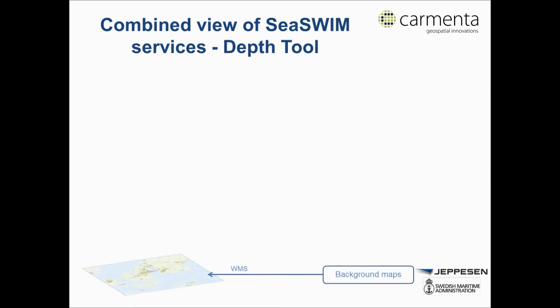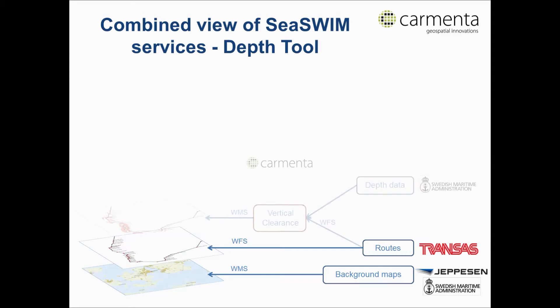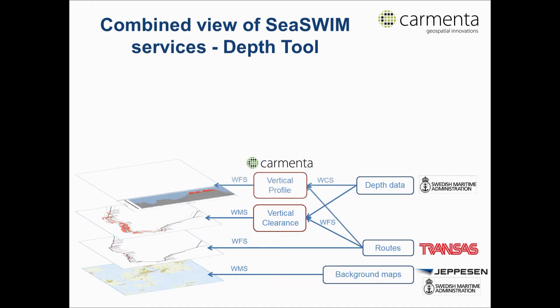In this example, we calculate safety depths for a Mona Lisa RTX route. We start by adding a background map, and on top of this we present a Mona Lisa route. Next, we have a layer displaying the result from a newly created web service that performs safety calculations based on data from both route and depth web services.